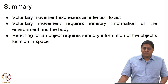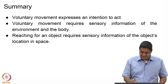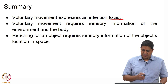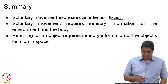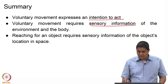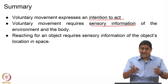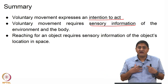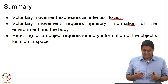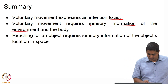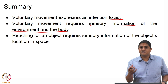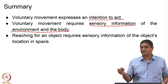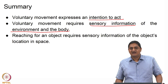In summary, voluntary movement essentially expresses an intention to act and is a manifestation of a decision-making process — the behavioral outcome of a decision process. It requires sensory information: information about the environment, about where I am, and about where my body parts are. Information about the environment and the body is needed, and reaching for an object requires sensory information about the object's location in space. With this we come to the end of this lecture. Thank you very much for your attention.